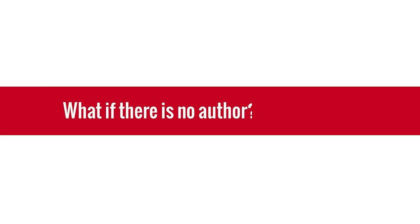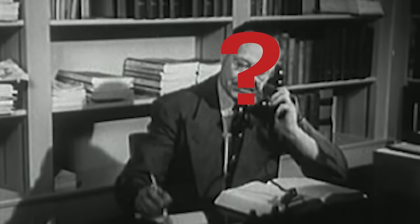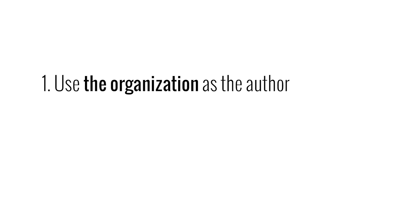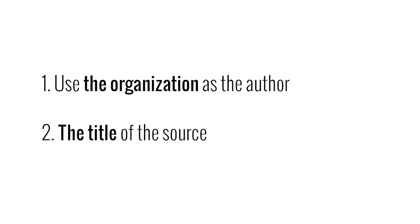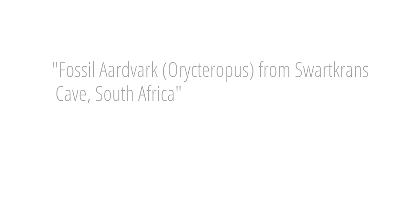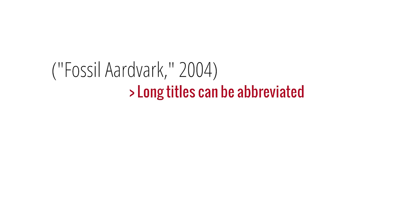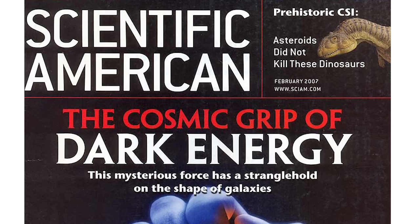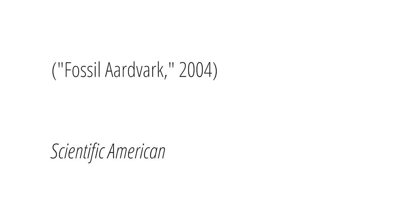What if there is no author? This is fairly common with web sources, especially if you are citing government agencies or professional organizations. If no author is identified, you have two choices: you can use the organization in place of an author, or you can use the title of the source, either in a signal phrase or a parenthetical citation. Remember that titles of articles need quotation marks around them, while titles of books and longer works need to be italicized.